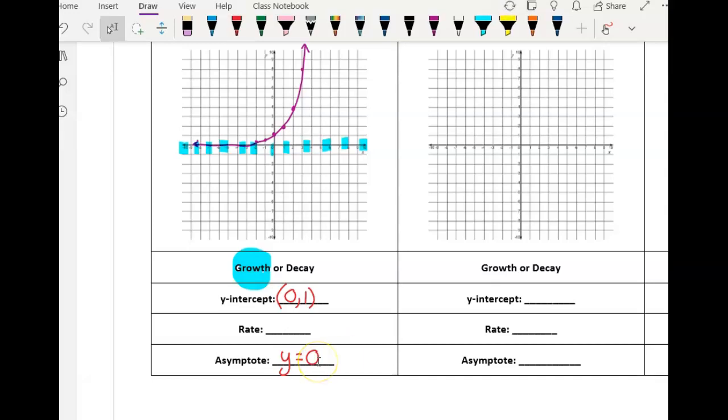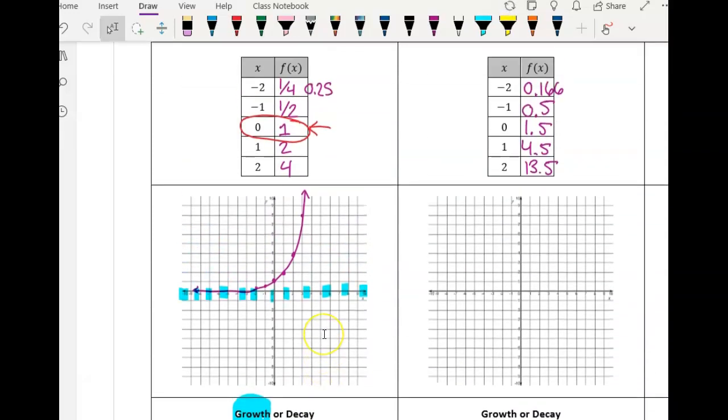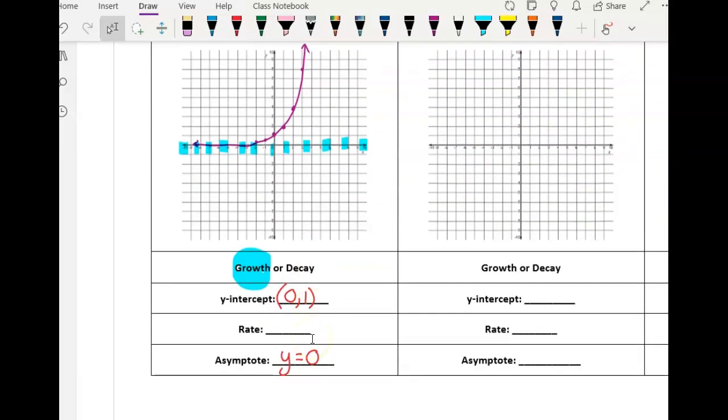Now you might be asking yourself, what does it mean the rate? Well, think about it like rate of change. What do you notice is happening? You might want to not start at the fractions. It might not be as obvious, but how did I get from one to two? I could have added one, but did I add one to get from two to four? No, I'm actually multiplying by two every time. One fourth times two is one half. One half times two is one.